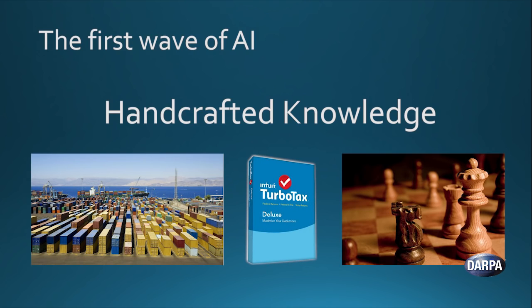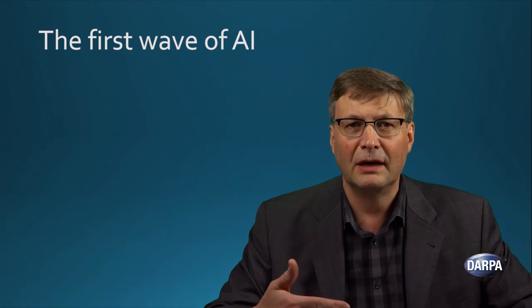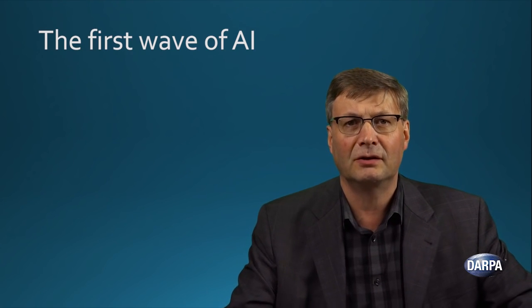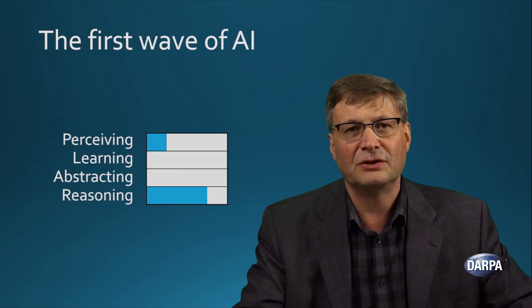In the case of TurboTax, you have experts who are tax lawyers, tax accountants, who are able to take the complexities of the tax code and turn them into certain rules, and the computer then is able to work through these rules. And this kind of logical reasoning is very typical of these first-wave systems. They're very good at being able to take the particular facts of a concrete situation and work through it, but they're not very good at other dimensions of intelligence.